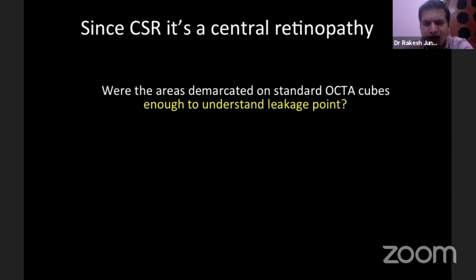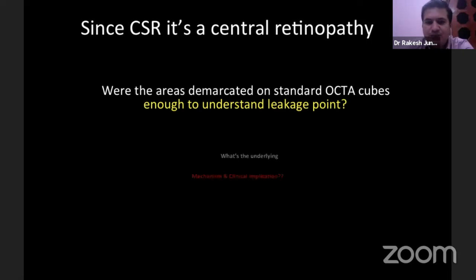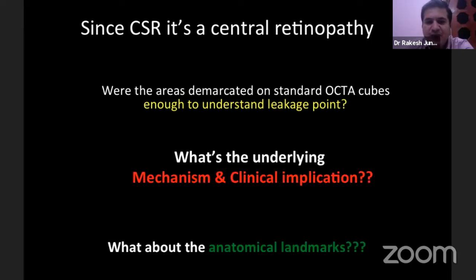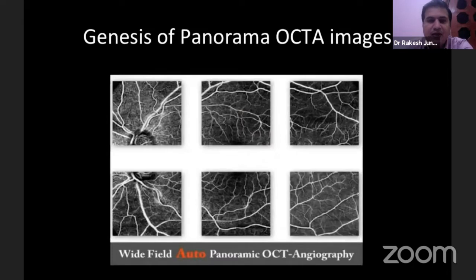So the key questions were: what areas were demarcated on the OCT angio cubes — were small cubes enough to understand the point of leakage? What was the underlying mechanism and clinical implication of this non-invasive imaging? And what anatomical landmarks could make it useful for treatment?